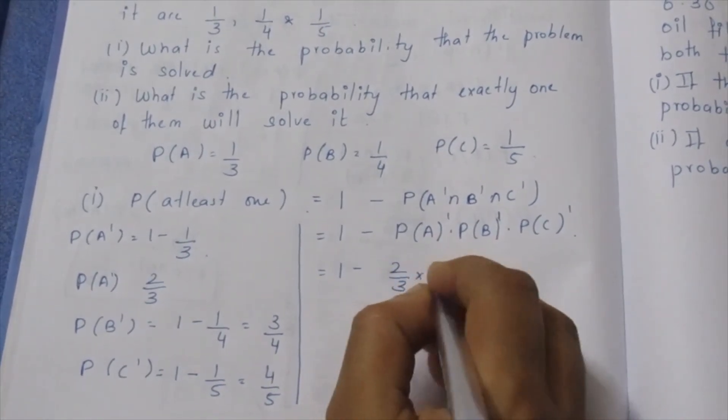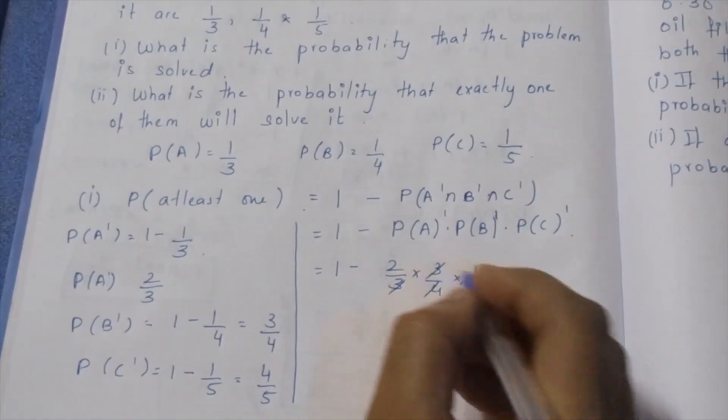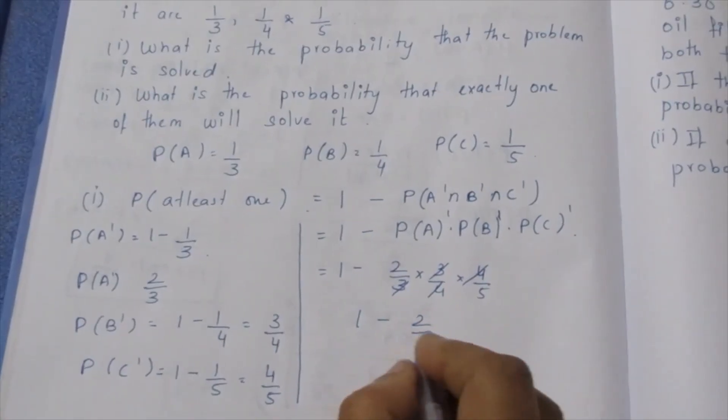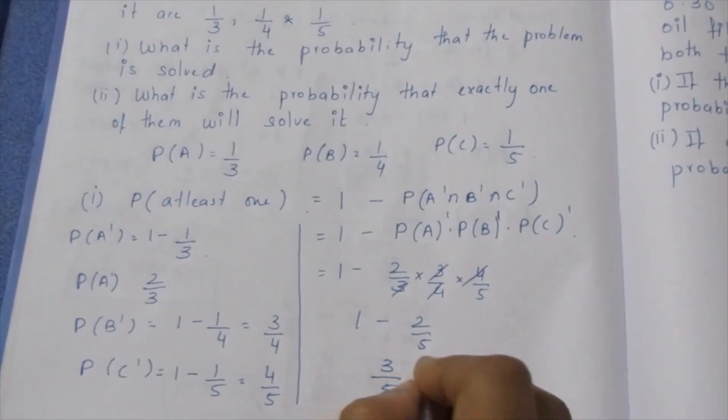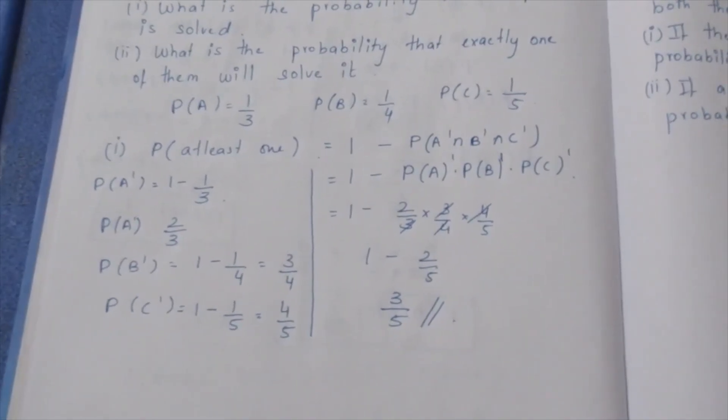2 by 3, 3 by 4, 4 by 5. 4 cancel, 3 cancel, 2 by 5. 1 minus 2 by 5 is equal to 5 minus 2, 3 by 5. This is at least 1 solve the possibility.